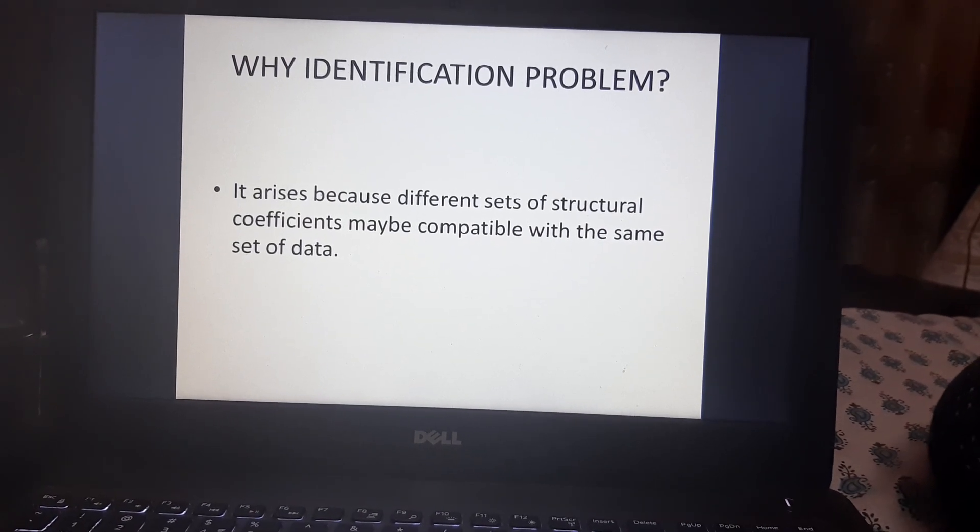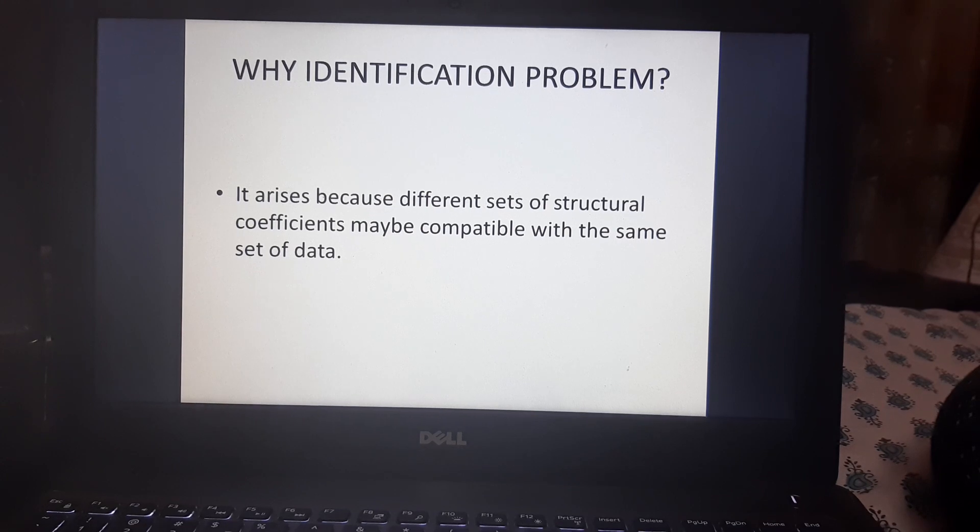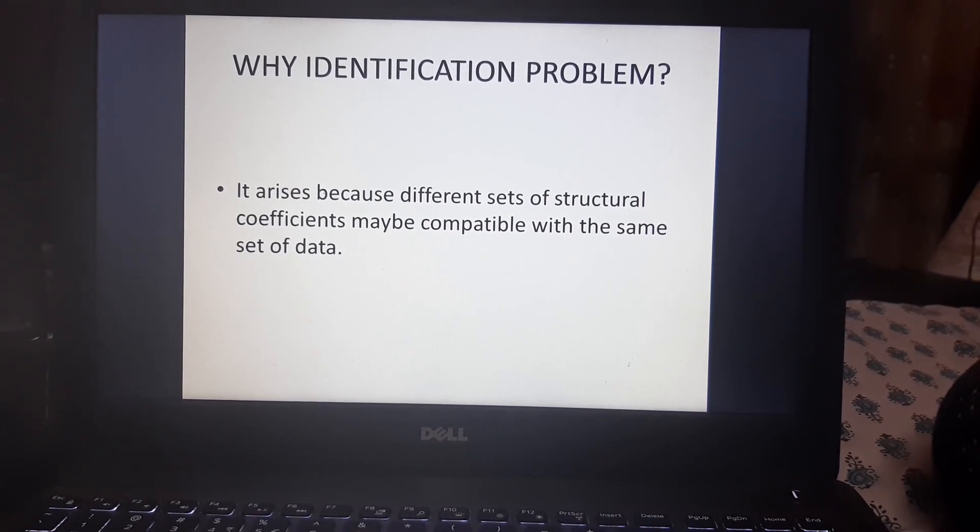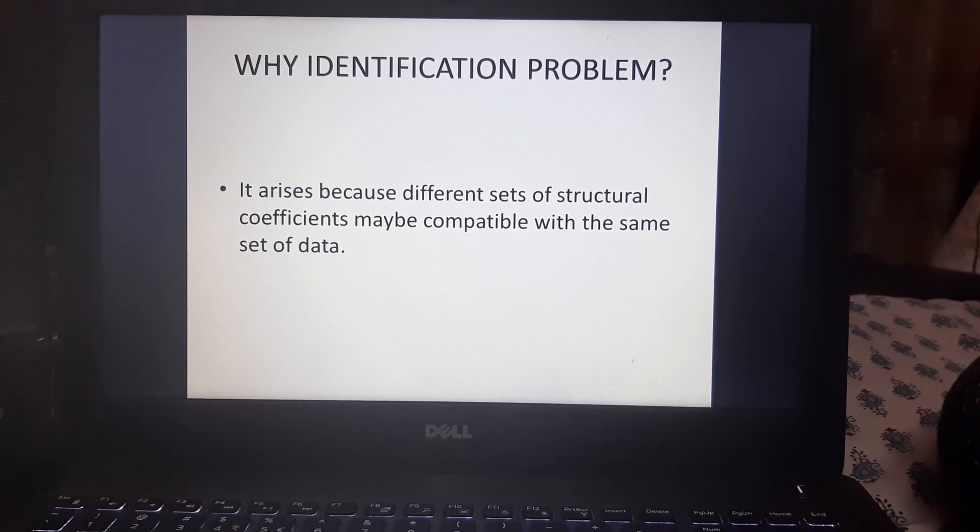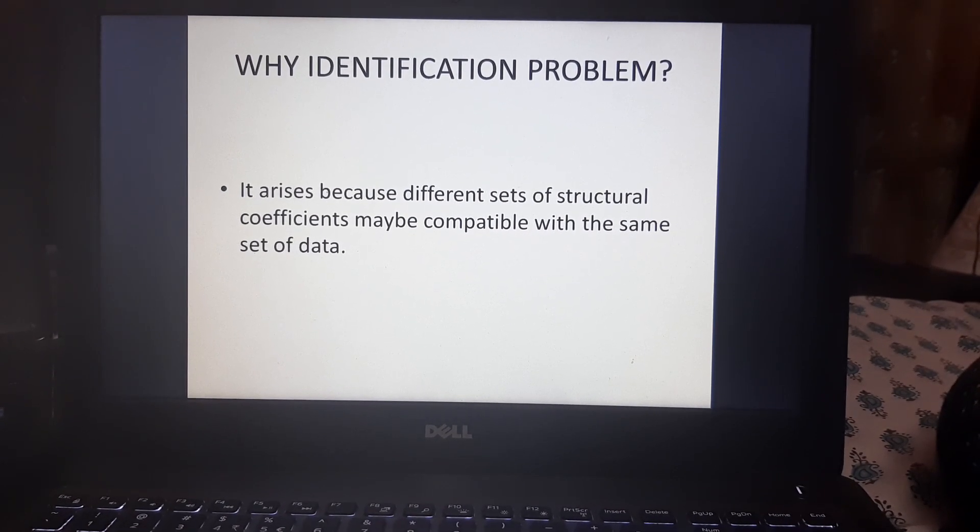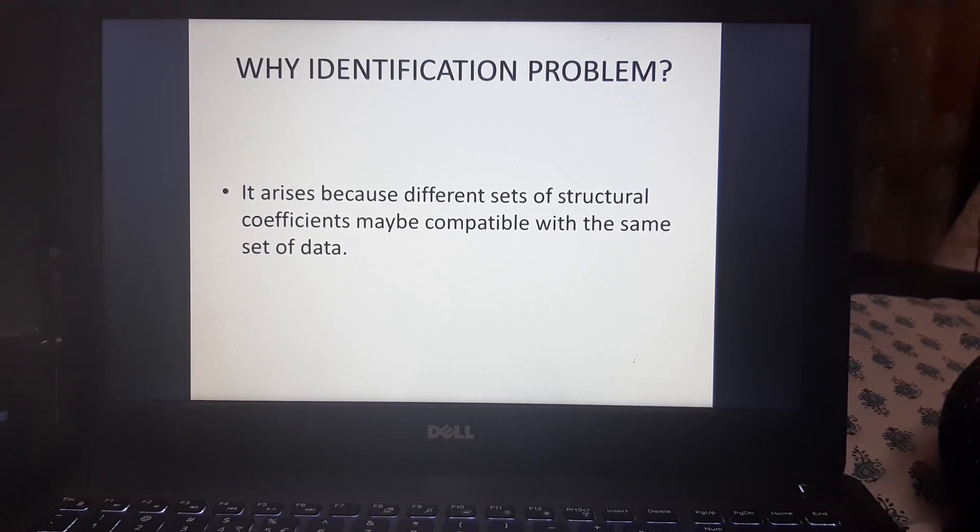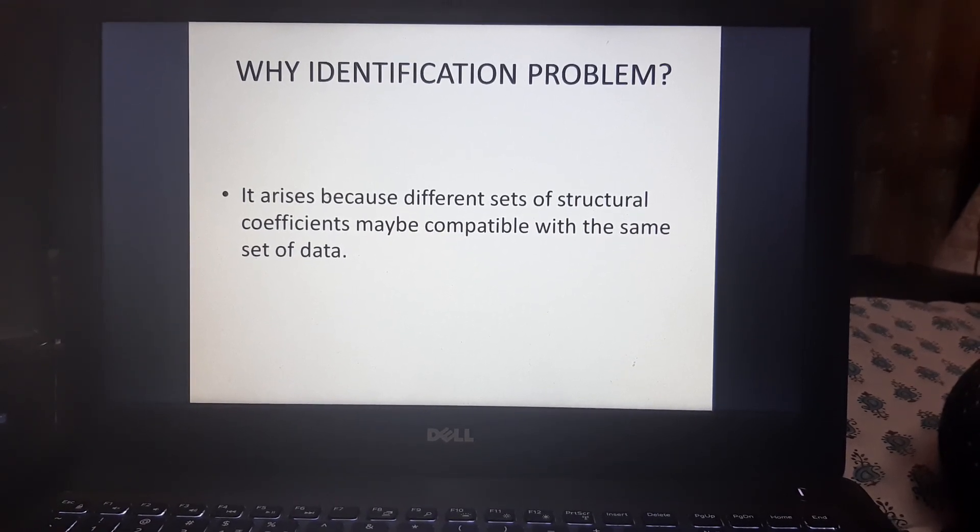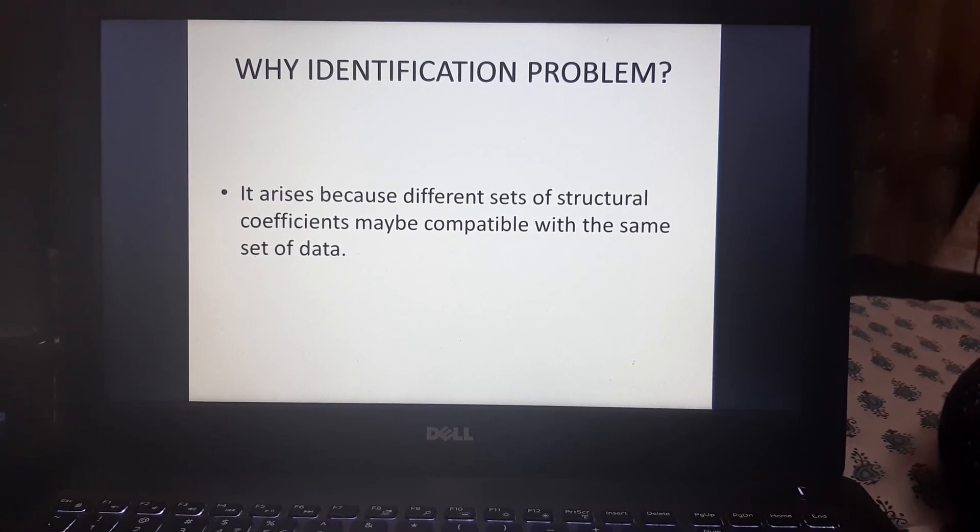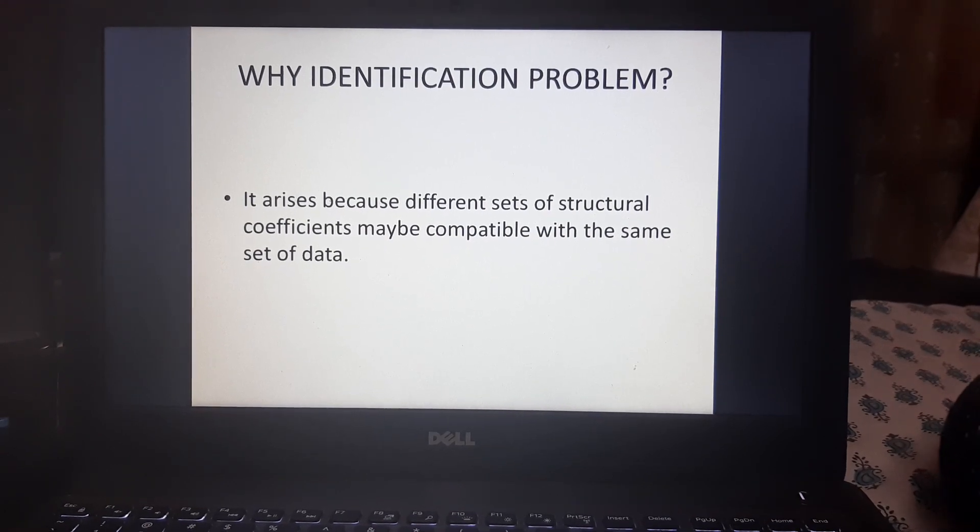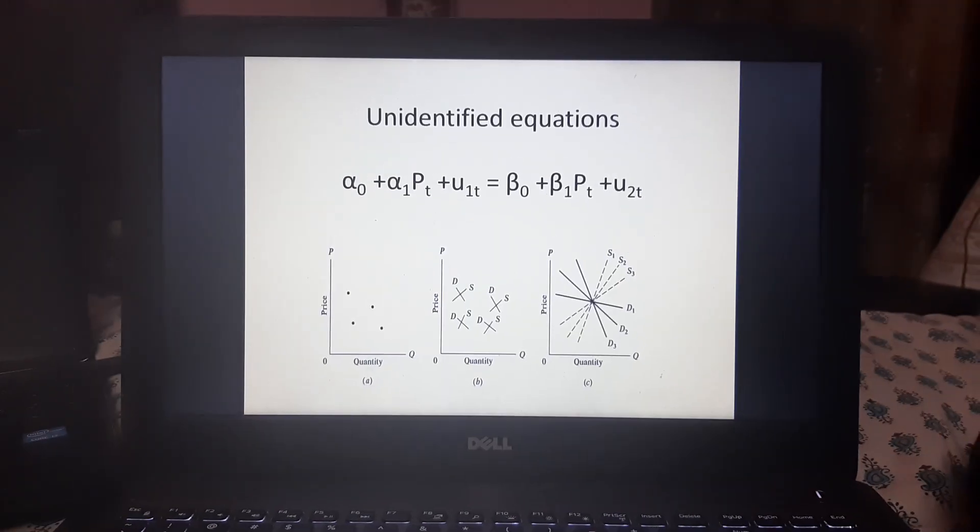Now, why identification problem? Why this problem arises and why we need to deal with it? So it arises because different sets of structural coefficients may be compatible with the same set of data. In other words, we can say that a given reduced form equation may be compatible with different structural equations and it may be difficult to tell which particular model we are investigating.